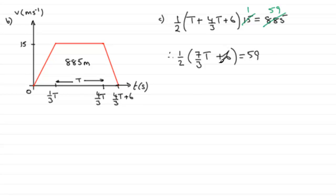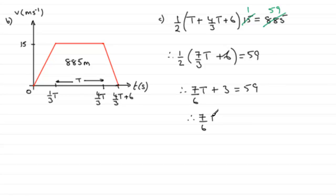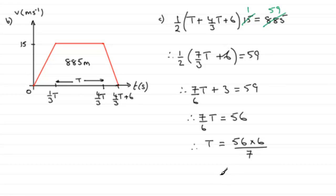Expanding the brackets, we get 7 over 6 times t plus half of 6, which is 3, equals 59. Taking 3 from both sides gives 7 sixths t equals 56. Multiplying both sides by 6 and dividing by 7 gives t equals 56 times 6 divided by 7, which comes to 48. Therefore, t equals 48.